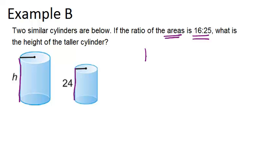And the way we do that is we take the 16 over 25 area ratio and square root it. Because remember that the area ratio is always the scale factor squared. So that means our scale factor, or our ratio between any two corresponding sides, must be 4 to 5. So that means that the ratio of the two heights also must be 4 to 5 because that's a linear measurement.